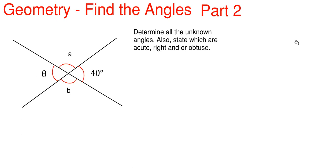So what we're going to be going over today is geometry and we are going to find some angles. This will be our second part of this series. What we have here is we have to determine all the unknown angles for this object shown. We only know one of them being 40 degrees and we have three unknowns: A, B, and theta.